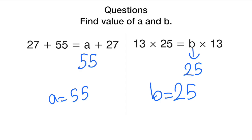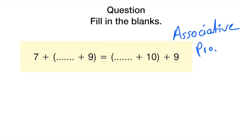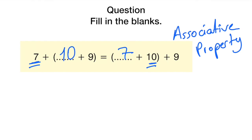The second question says fill in the blanks using the associative property of addition. As you see, the seven is here so seven should come here. Here we don't have a number, and the ten is here so ten should come here, and nine and nine again.